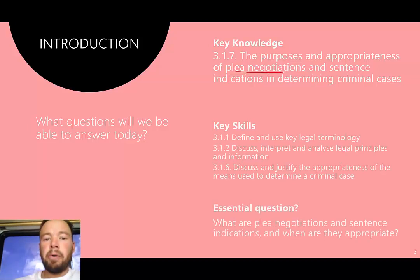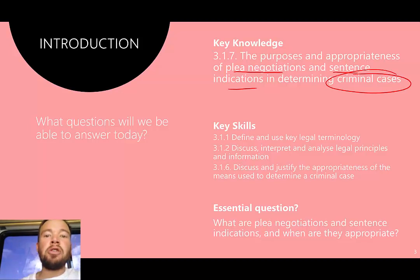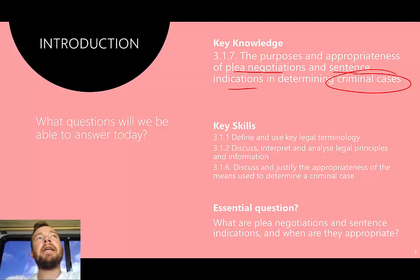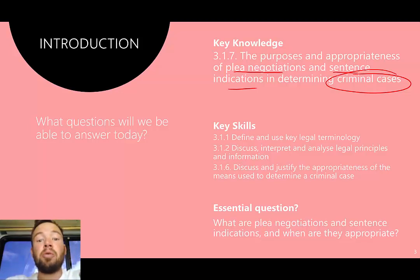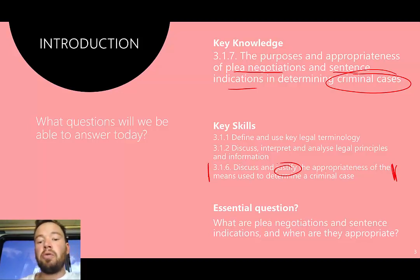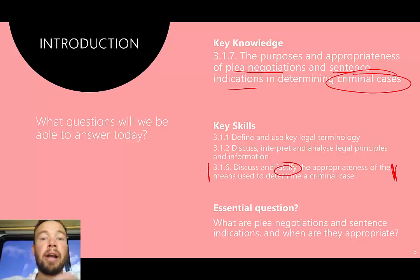We are focused on plea negotiations and sentence indications and their role in determining a criminal matter — what purpose they play in both instances trying to get an accused person to plead guilty so that the criminal case is resolved. It all comes back to this really important skill: discuss and justify the appropriateness of the means used to resolve or determine a criminal case, focusing on plea negotiations and sentence indications.